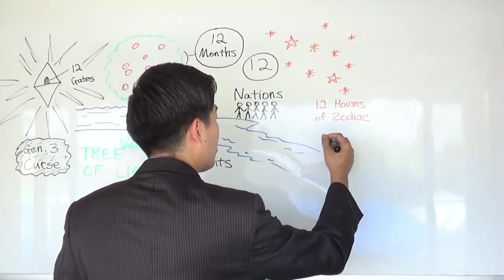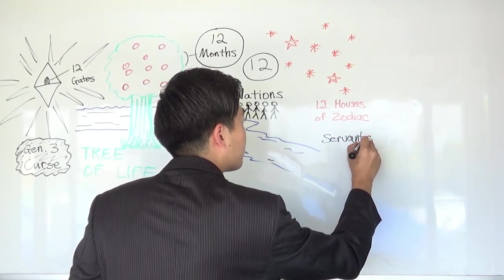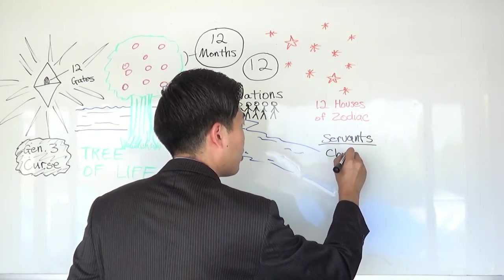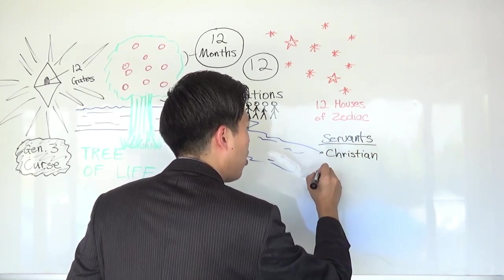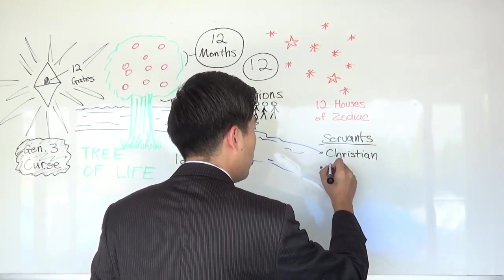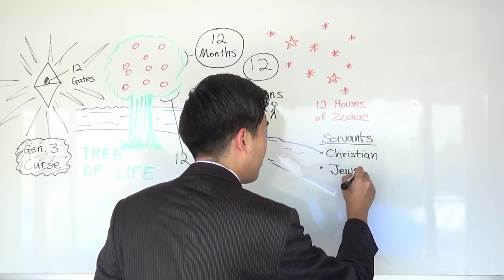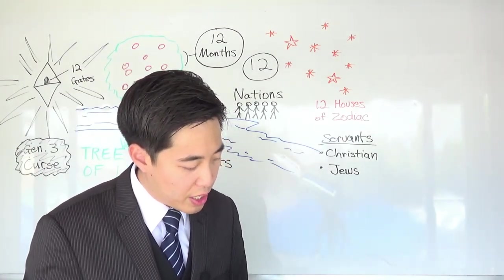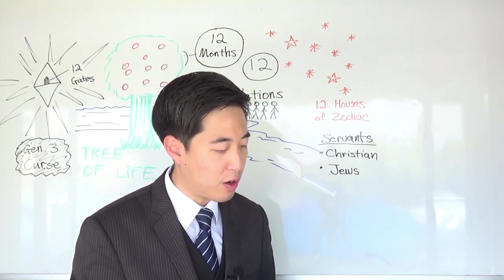So then the servants will consist of not just the Christian church. It will also include over here different saints. So then, for example, we can put Jews over here. Whether they be in the Old Testament or Tribulation. So all these servants will be coming to serve him.